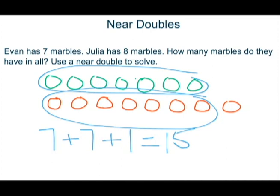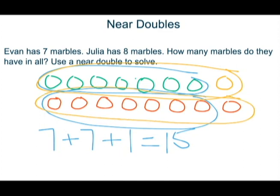If I'm using doubles minus one then I would pretend that there was an extra one here. So then I would be using eight plus eight and subtracting this one. Eight plus eight is sixteen minus one is fifteen.